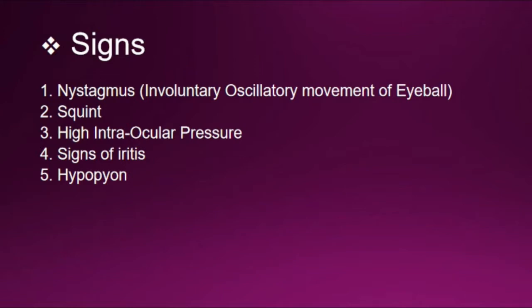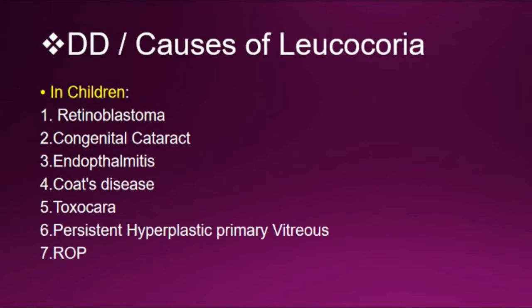Signs include nystagmus — involuntary oscillatory movement of the eyeball — squint, high intraocular pressure, and signs of iritis and hypopyon. Differential diagnosis or causes of leukochoria in children include retinoblastoma, congenital cataract, endophthalmitis, and vitreous opacity.